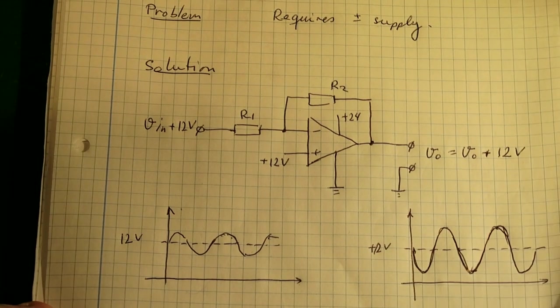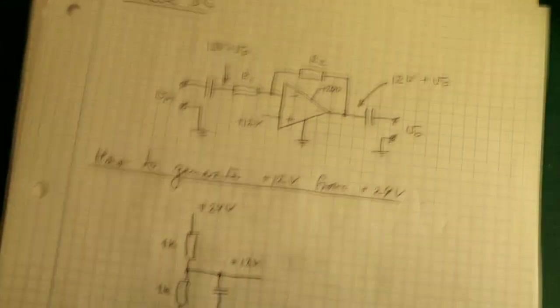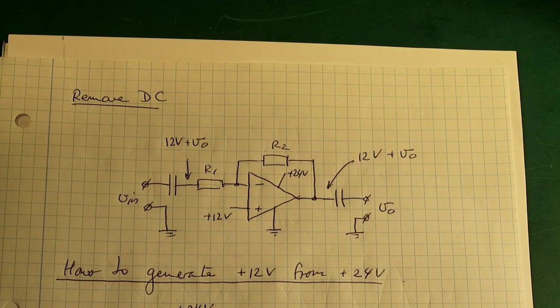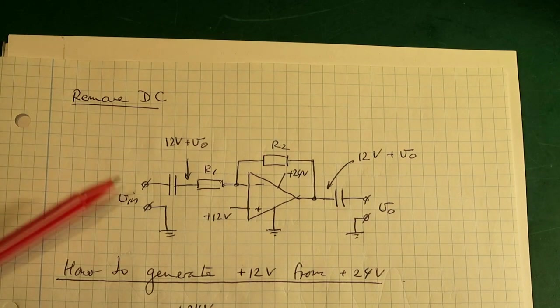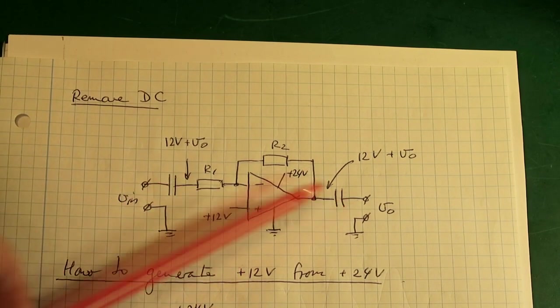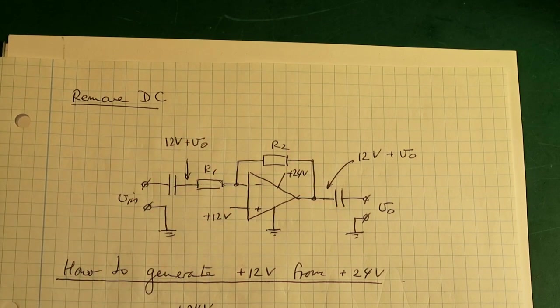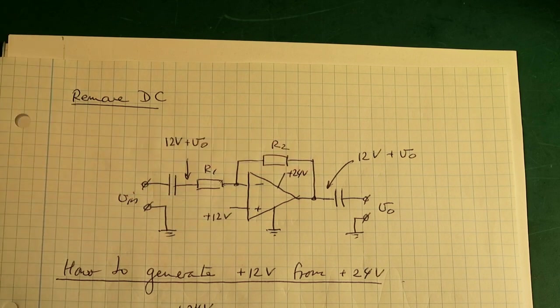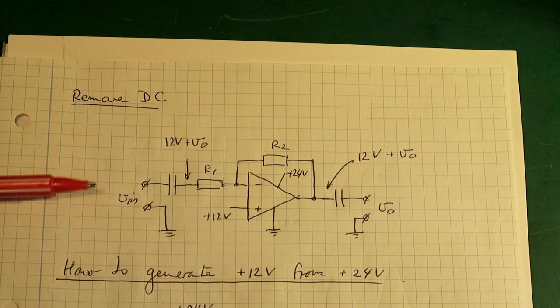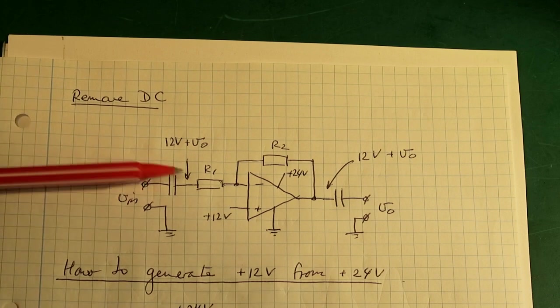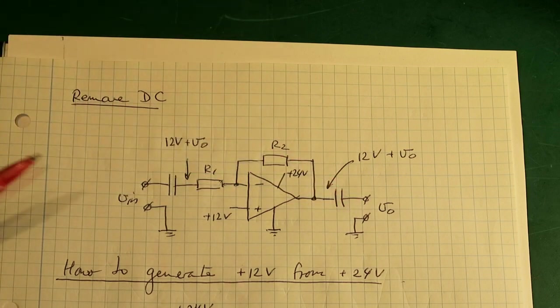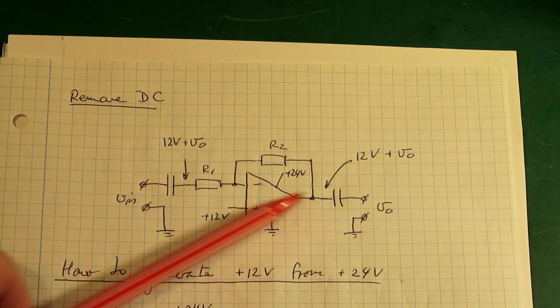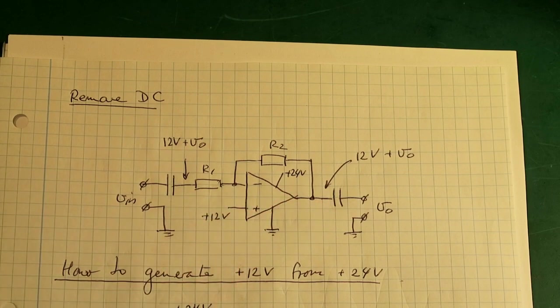So the last little thing we want to take care of is how to remove the 12 volt. And I have a drawing here and it's basically just inserting capacitors at both ends. And as you know AC voltages will go through capacitors. Changes in voltage will go through capacitors. But the 12 volt that is on top of everything is a fixed value of 12 volt it will not go through this capacitor. And that is why these capacitors here are called DC blocking capacitors.